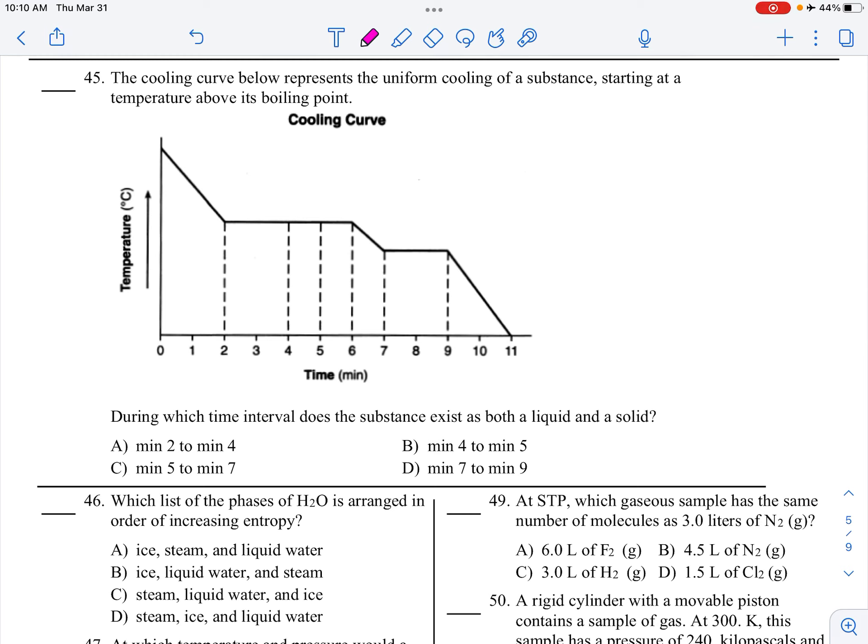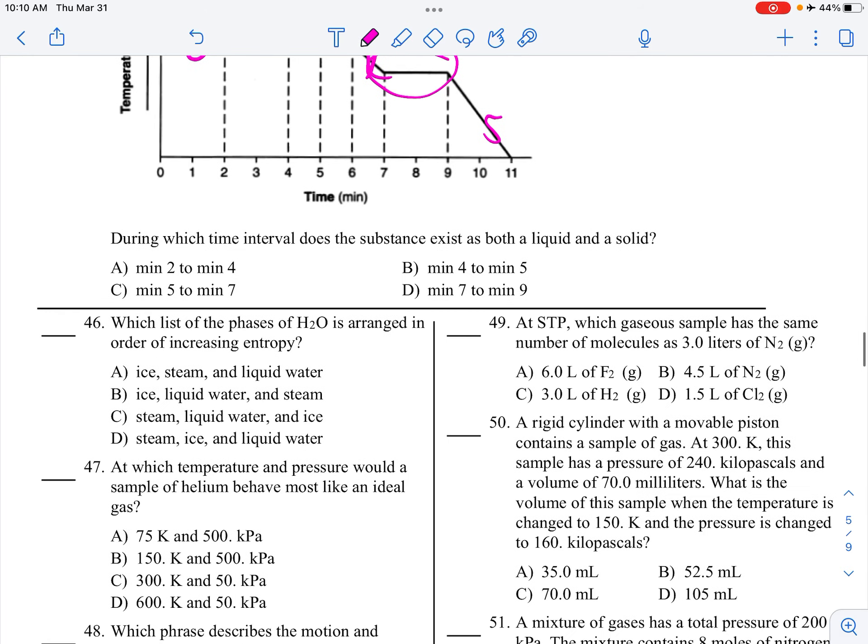Cooling curve. During which time intervals does it exist as both a liquid and a solid? So, again, we're cooling down. So, this is gas. This is liquid. This is solid. So, the phase change between liquid and solid is here. That's between minutes 7 and 9. Increasing entropy is increasing disorder. So, solid to liquid to gas. So, liquid, yeah, B.